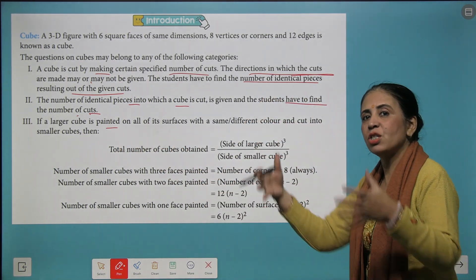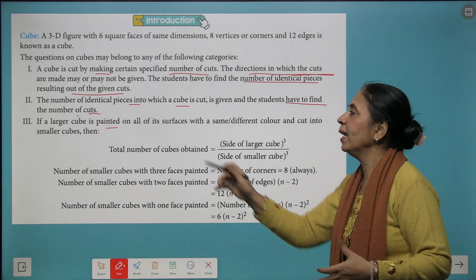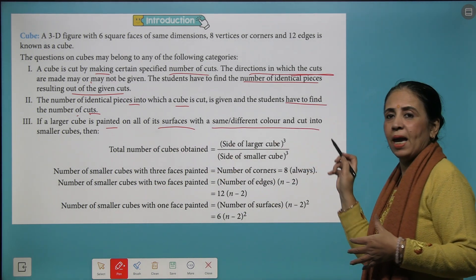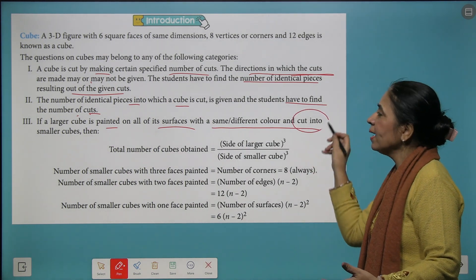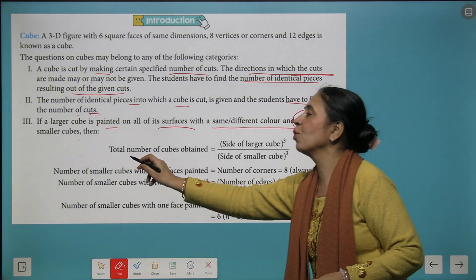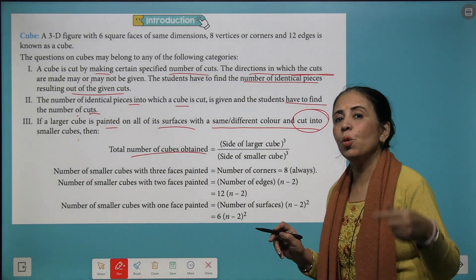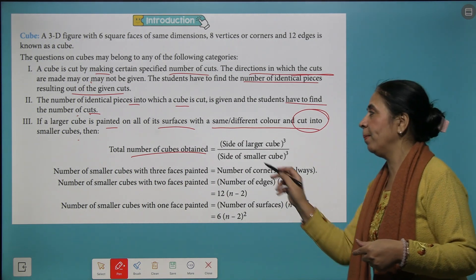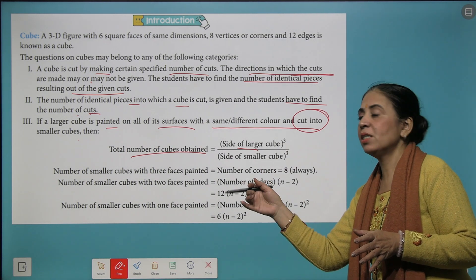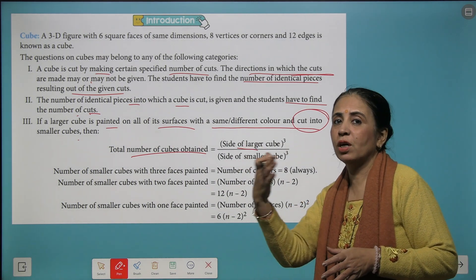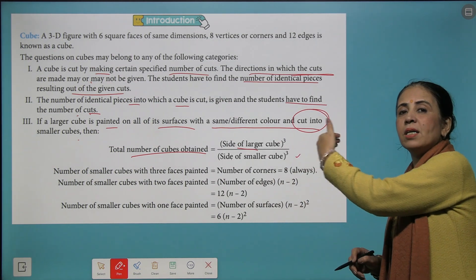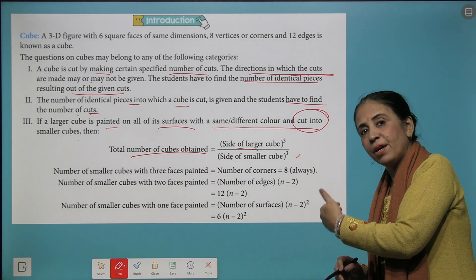And the third category of question is we have a larger bigger cube and it is painted on all its 6 surfaces with the same or different color and it is cut into smaller cubes. Then you have to remember that the number of cubes so obtained will be equal to the side of the larger cube cubed divided by the side of the smaller cube cubed is calculated. Then the two things are divided.